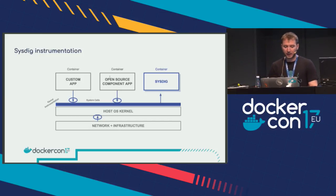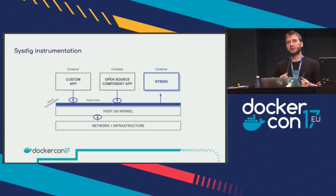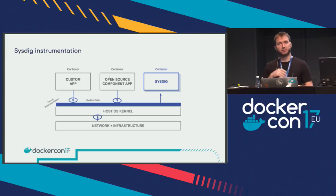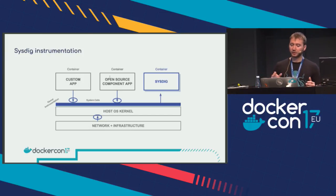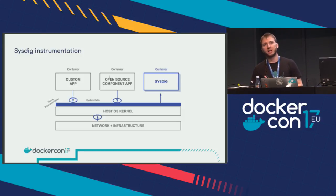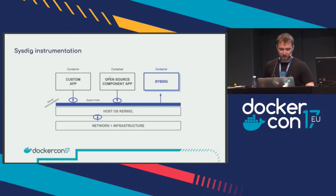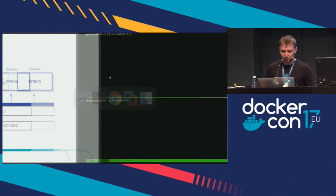So Sysdig wrote a little kernel instrumentation that captures all the system calls in your system — done by whoever, containers or processes outside containers. All the system calls then get routed to the user space application where we can have rich visibility. Here's a quick one-minute demo: I have an infrastructure with a bunch of containers — actually a Kubernetes infrastructure.